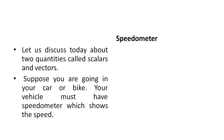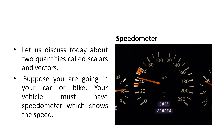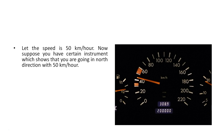To understand the difference between the two, let us take an example. Suppose you are going in your car or bike. Your vehicle must have a speedometer which shows the speed — you have a speedometer in front of the steering. The function of the speedometer is to tell us about the speed. Suppose the speed of your car or bike is 50 kilometers per hour.